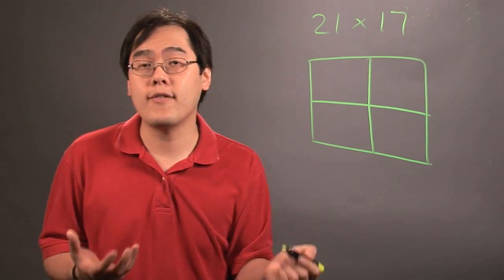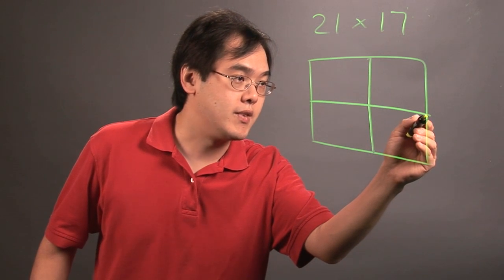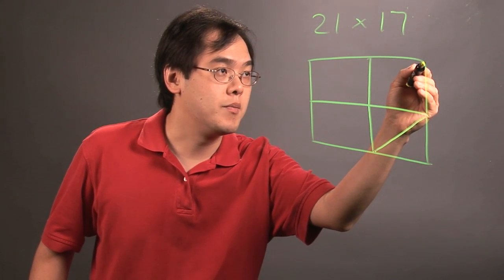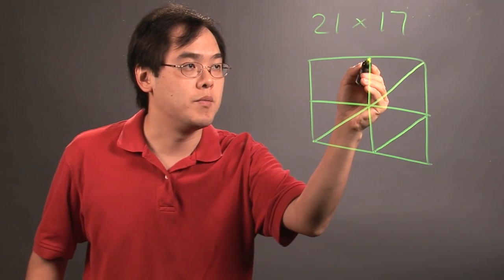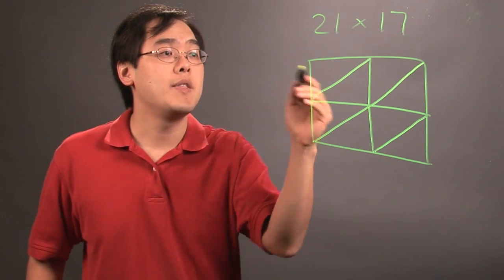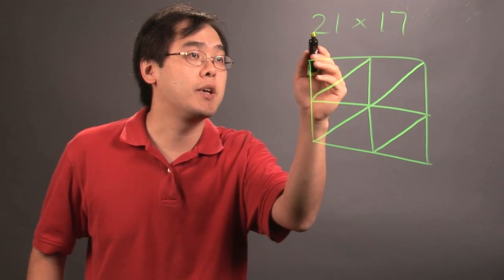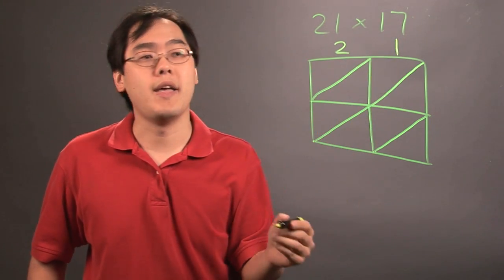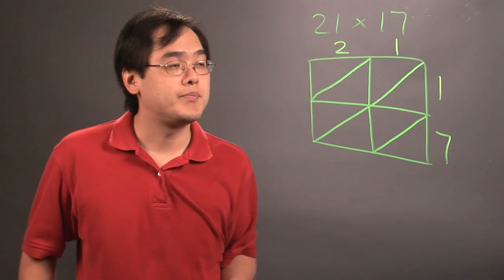And what you want to do after that is create diagonals. So you have a diagonal here, a diagonal from this corner to this corner, and then another diagonal from this corner to this corner. Now, what does this have to do with the numbers themselves? Well, this actually gives you some placement in terms of where numbers go. So because 21 was mentioned first, 21 will be over here, and then 17 is going to be here.